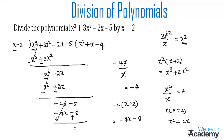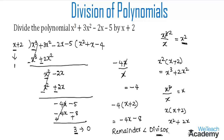So -5 + 8 gives 3. The degree of the remainder 3 is 0, as it is a constant term, and the degree of the first term of the divisor is 1. Since the degree of the remainder is less than the degree of the divisor, we stop this process. The quotient is x² + x - 4 and the remainder is 3.